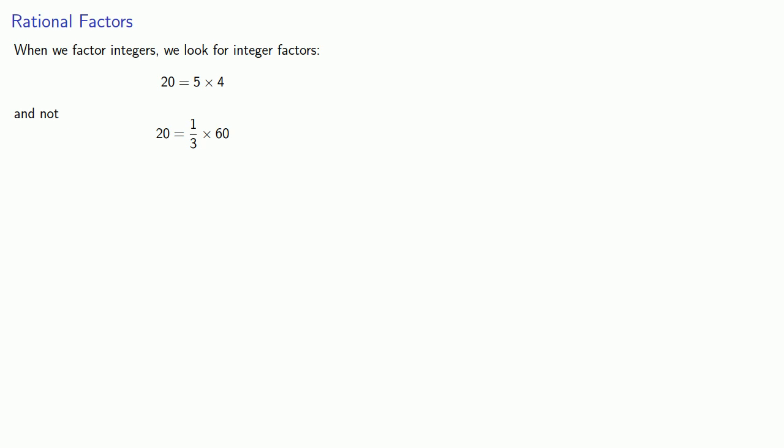We'll make a similar restriction for factoring polynomials. When we factor polynomials with rational coefficients, we look for factors with rational coefficients. So we can factor x² - x - 20 as x - 5 times x + 4. So here we see that both of our factors have rational coefficients, and this is a factorization.